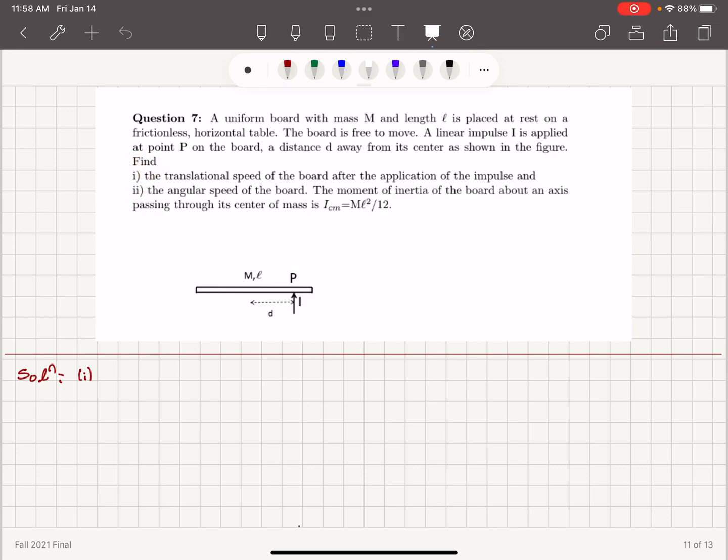Find in part 1 the translational speed of the board after the application of the impulse, and part 2 the angular speed of the board. The moment of inertia of the board about an axis passing through its center of mass is given by capital M L squared over 12.